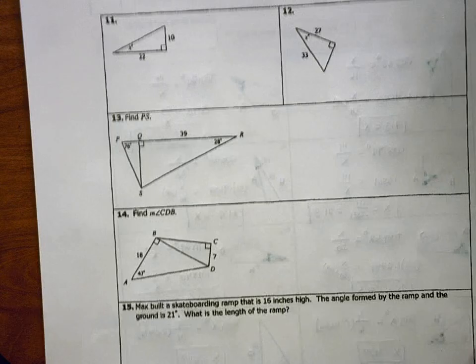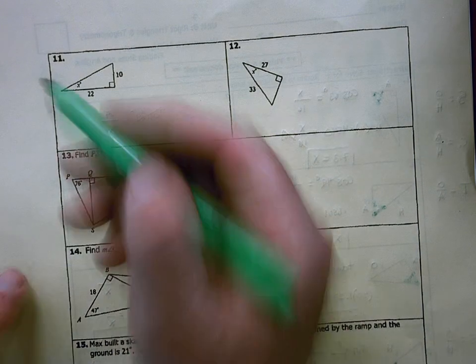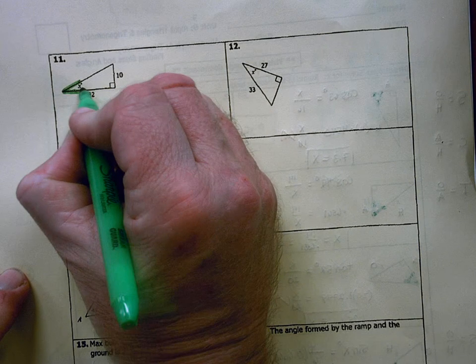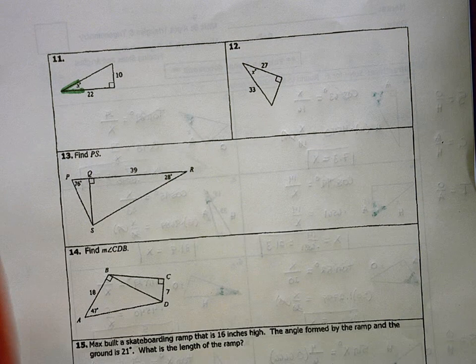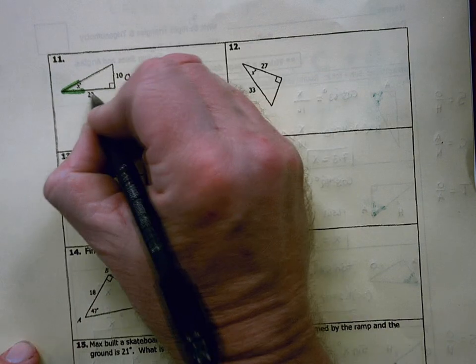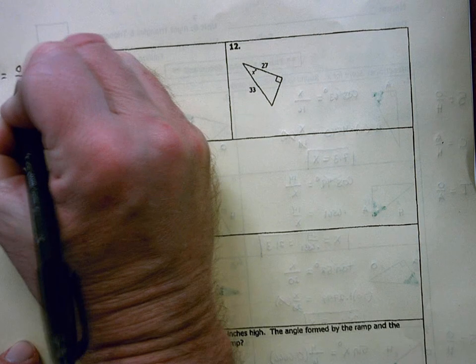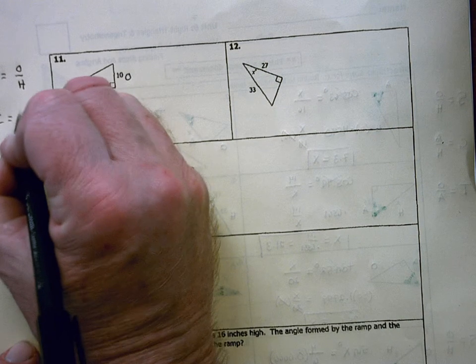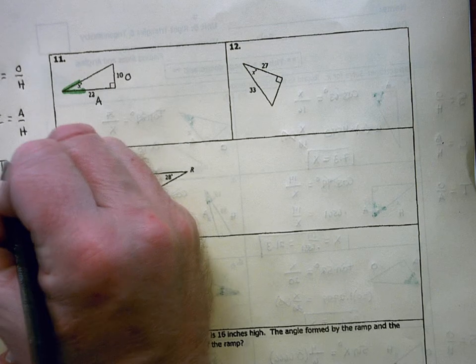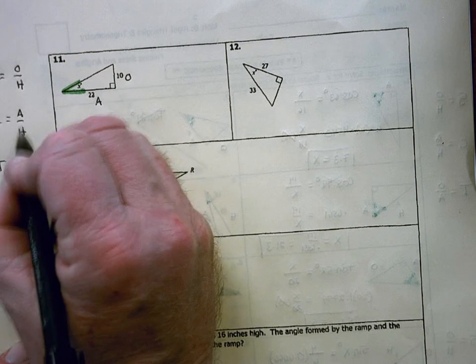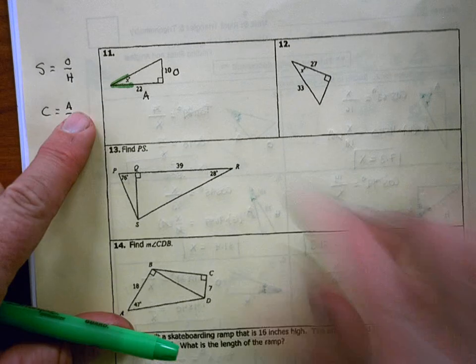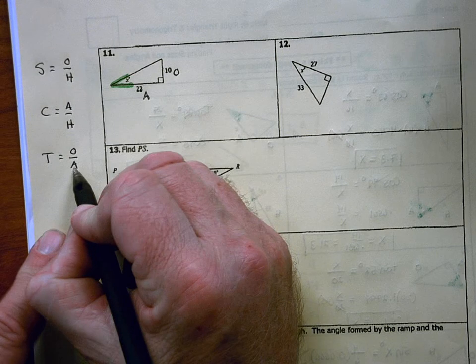Moving on, number 11. All right? So I'm still using sine, cosine, and tangent in these problems. In number 11, my theta angle is right here. It is x. 10 is the opposite leg. So I'm going to put an O there. 22 is the adjacent leg. So I'm going to put an A there. I'm going to write SOHCAHTOA here. Write the definitions for sine, cosine, and tangent. Always referring back to these. You have to have these three definitions memorized. And if not, these problems will be a complete train wreck for you. All right. So what do I have? O and A. O and A correlates with tangent.